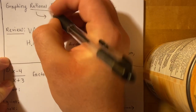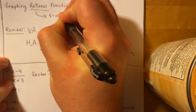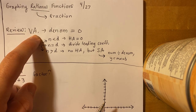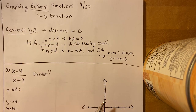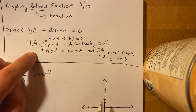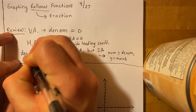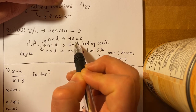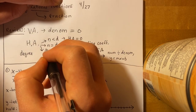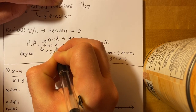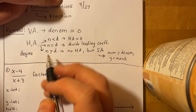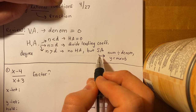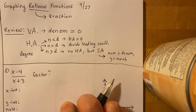Remember that the word rational just means a function that has a fraction in it — something over something. In the past couple of weeks, we learned that you can find a vertical asymptote when the denominator is equal to zero. We also learned about horizontal asymptotes, which depends on the degree of the numerator and the denominator. If the degree of the numerator is less than the degree of the denominator, you have a horizontal asymptote at zero. If the degrees are equal, you divide the leading coefficients. If the numerator degree is greater, there's no horizontal asymptote but there's a slant asymptote, which is the numerator divided by the denominator using box division.